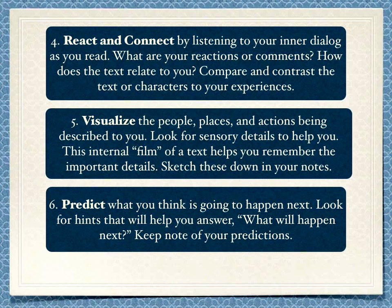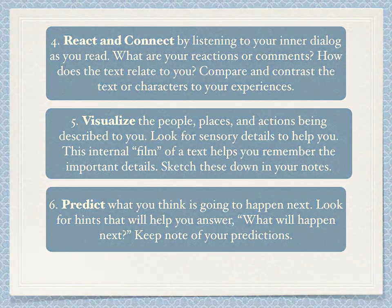Five, visualize the people, places, and actions being described to you. Look for sensory details — hearing, sight, smell — to help you come up with these. This internal film of a text helps you remember the important details. Sketch these down in your notes; literally draw a picture. Six, predict what you think is going to happen next. Whether it's a science text or a fiction book, look for hints that are going to help you answer what's going to happen next. Keep note of your predictions — it'll be fun to see if they come true or not.